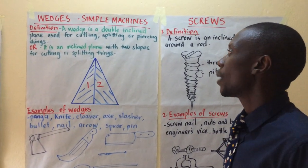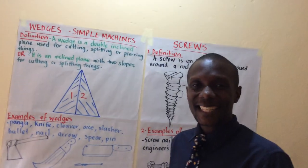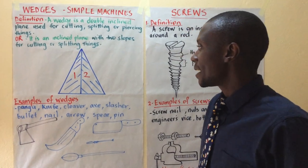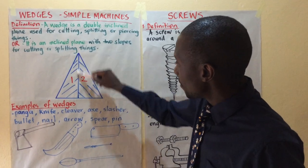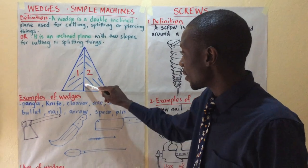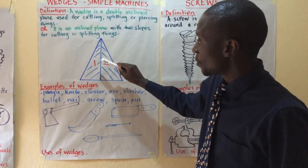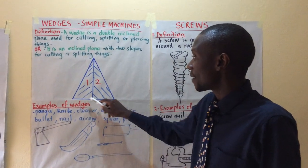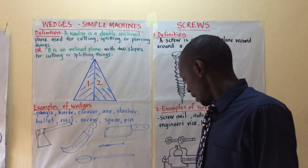What is a wedge? A wedge is a double inclined plane used for cutting, splitting, or piercing things. The symbol for a wedge combines two inclined planes — remember, an inclined plane is a right-angled triangle. So the examiner can ask you to identify the simple machine represented by the symbol below. That is a wedge.